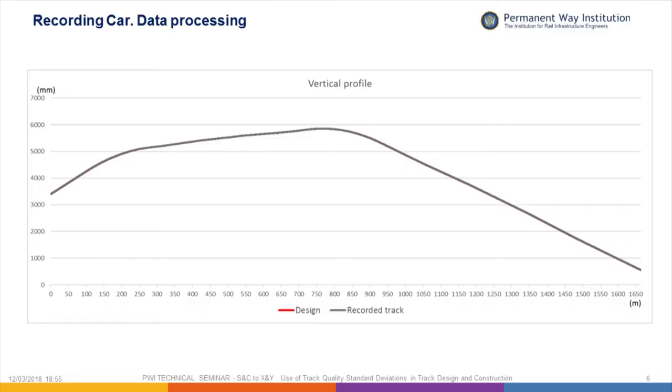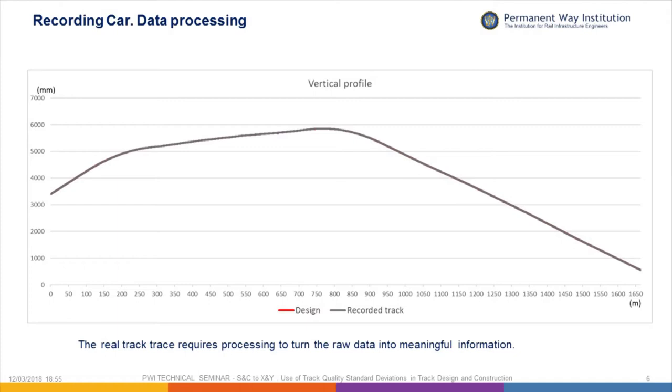What happens when we measure some track that isn't flat and straight? Here's a vertical profile of some track which has got straight grades, vertical curves, and some cant. You can see that with the same irregularity of surface, it's completely lost in the general profile of the gradient changes. The scale is now in metres rather than millimetres, so we can't use this for measuring peak-to-peaks, exceedances, or roughness — so what do we do?